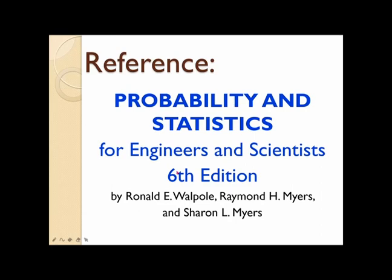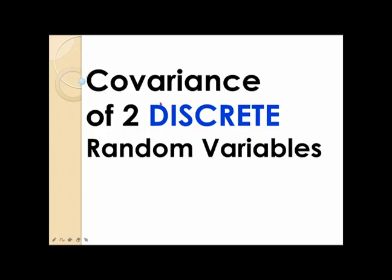The main reference used in coming up with this presentation is the book of Walpole, Myers, and Myers entitled Probability and Statistics for Engineers and Scientists, the 6th edition. In this video, I'll explain the covariance of two discrete random variables.